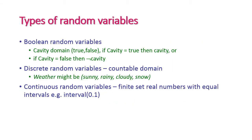There are three different types of random variables. The first is a boolean random variable, which has only two values. For example, in the cavity domain, cavity is either true or false. If cavity is true we write 'cavity'; if false we write 'not cavity'. The second type is a discrete random variable, which has a discrete number of values for a particular domain. For example, the weather domain has four values: sunny, rainy, cloudy, and snow. If the weather is cloudy, we write weather = cloudy.